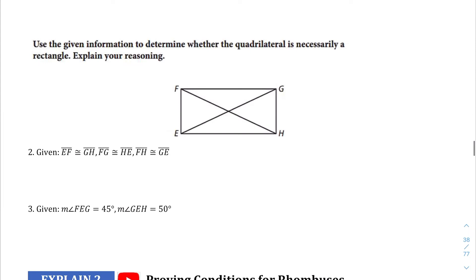So given that information, we're asked to explain whether or not these are rectangles. Take a look at question number two. If EF is congruent to GH, and FG is congruent to HE, and FH is congruent to GE, so the diagonals are congruent. Is this a rectangle? We're going to say yes, because of theorem two.